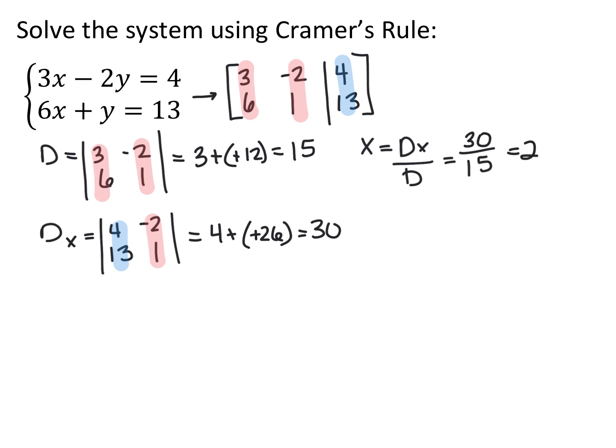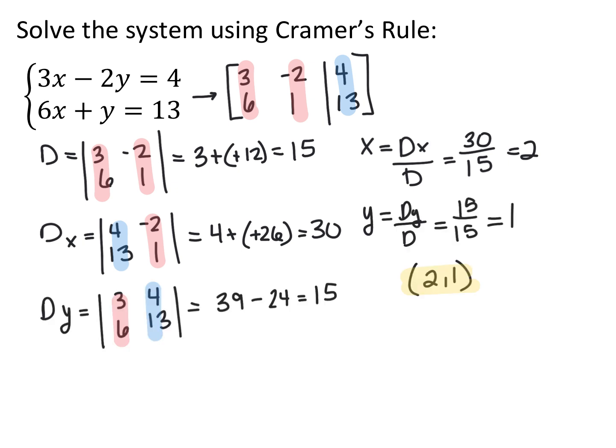For Dy, keep the x column the same and replace the y column with 4 and 13, then take the determinant — we end up with 15. So y equals Dy over D, which is 15 over 15, giving us 1. The solution to this system is (2, 1). A common question is: why use this when substitution or elimination would be easier? For a simple 2x2 system, yes — substitution or elimination is easier. But for higher-order systems, like 10 equations with 10 unknowns, it would be very difficult. We're learning the method on a basic system so you can apply it to more complex ones.